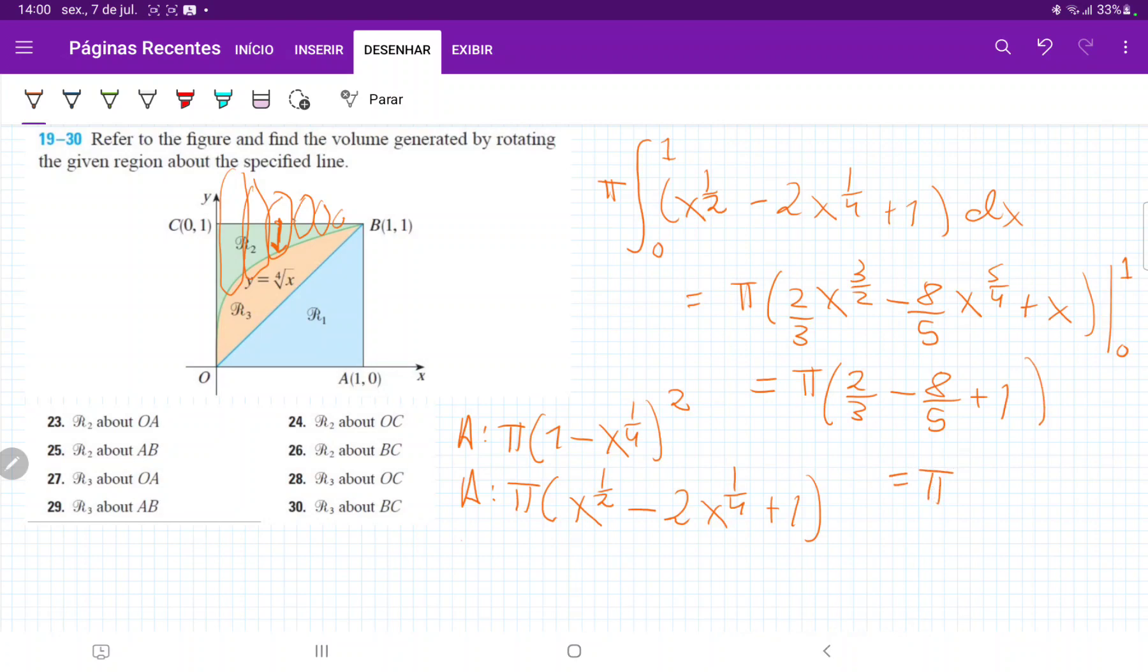Let me put that in my calculator: two-thirds plus 1 minus 8-fifths. That gives us, oh, it's not giving me a fraction. Oh, it is. It's 1 over 15. So that gives us pi over 15, and that is the answer to my volume when I take R2 and revolve it about BC.